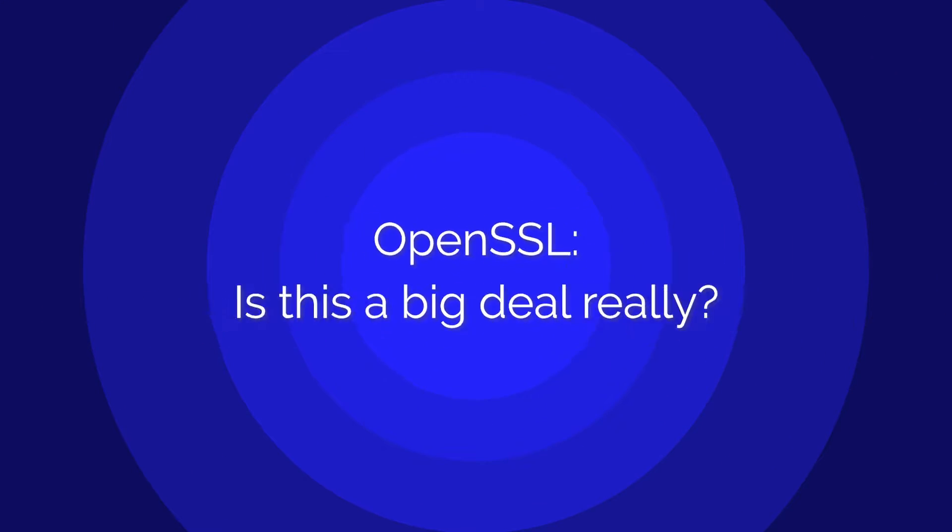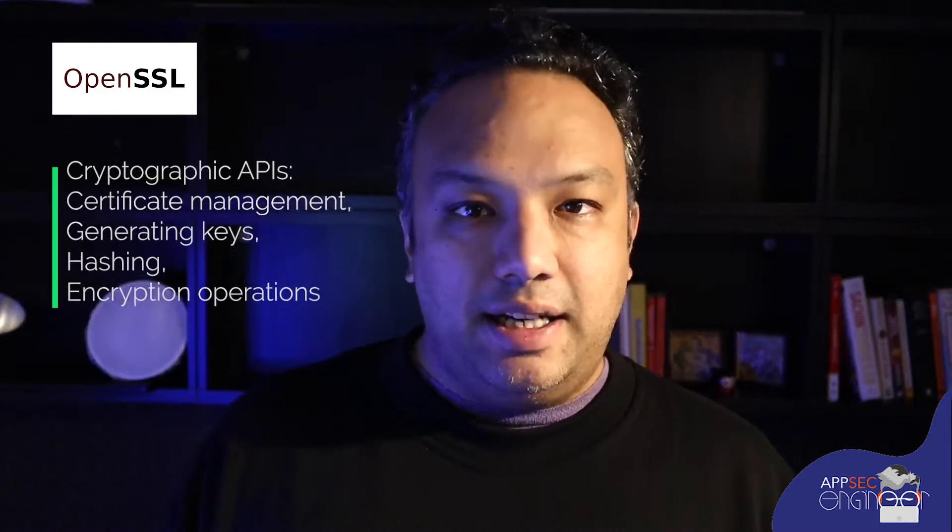OpenSSL is a very popular library that's being used by billions and billions of devices all over the Internet. OpenSSL basically gives you a bunch of cryptographic APIs that allow you to do everything from certificate management, generating certificates, generating keys, to hashing, to other encryption operations as well. It is a very popular library used from toasters to servers that process tons of information. So OpenSSL is ubiquitous — it's there everywhere.